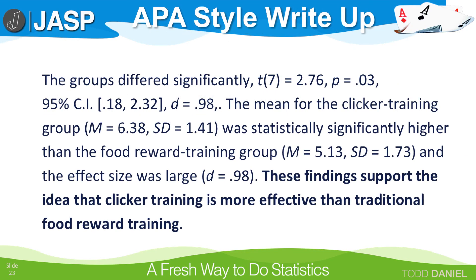Then I would report the findings from my t-test, including the confidence interval and the effect size. I would also include the means and standard deviations for each group, and those come from the descriptive statistics. Notice the conclusion. These findings support the idea that clicker training is more effective than traditional food reward training. This last statement about the meaning of the findings would go in your discussion section if you are writing this up for an academic paper.